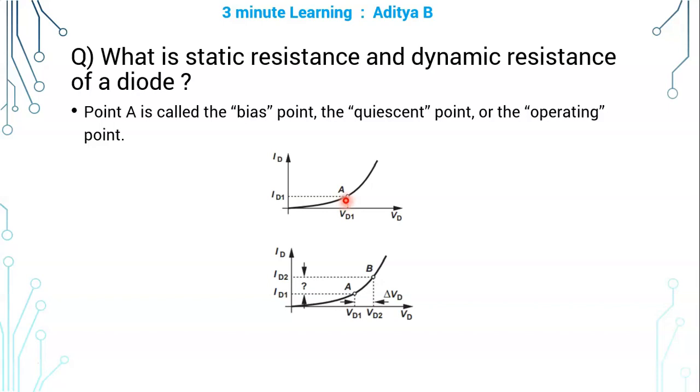If you choose any one point on this exponential graph, that point is called bias point or quiescent point or operating point, and this point is chosen in such a way that the diode is in the forward bias region. That is, the voltage across the diode VD1 should be greater than the knee voltage or cut-in voltage of the diode.